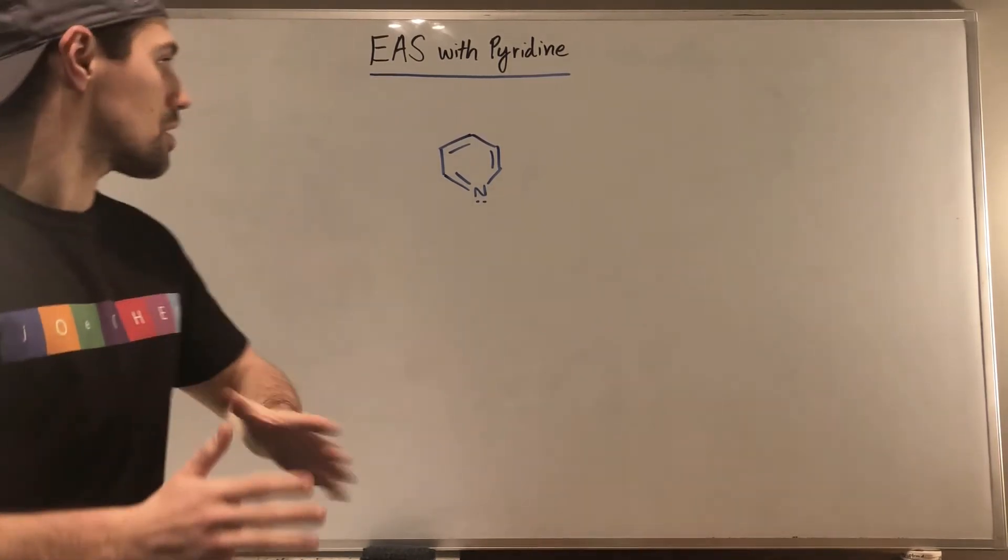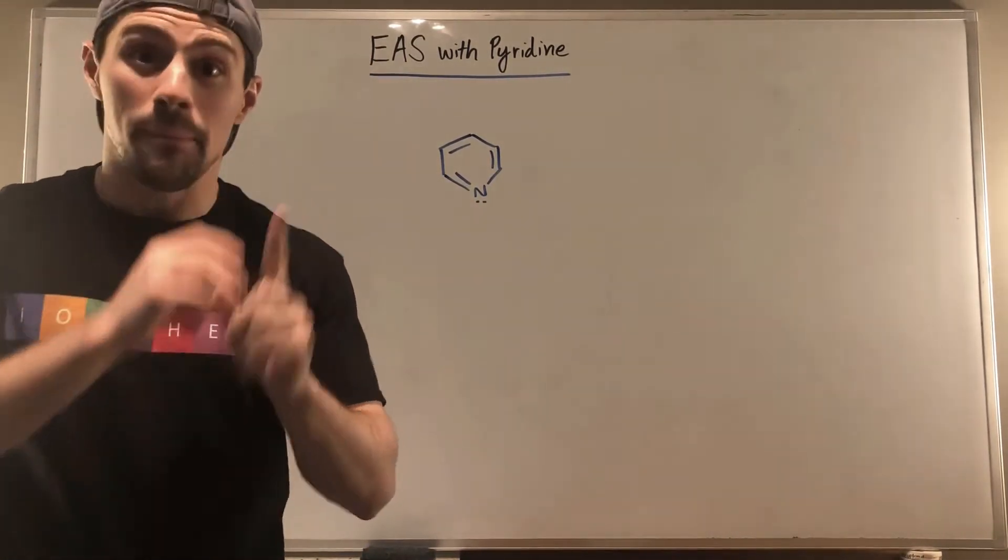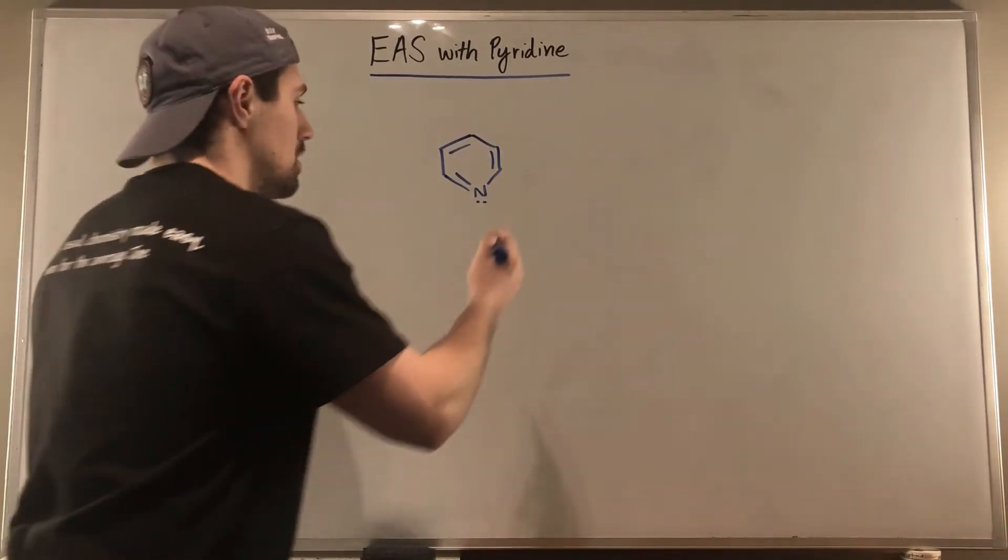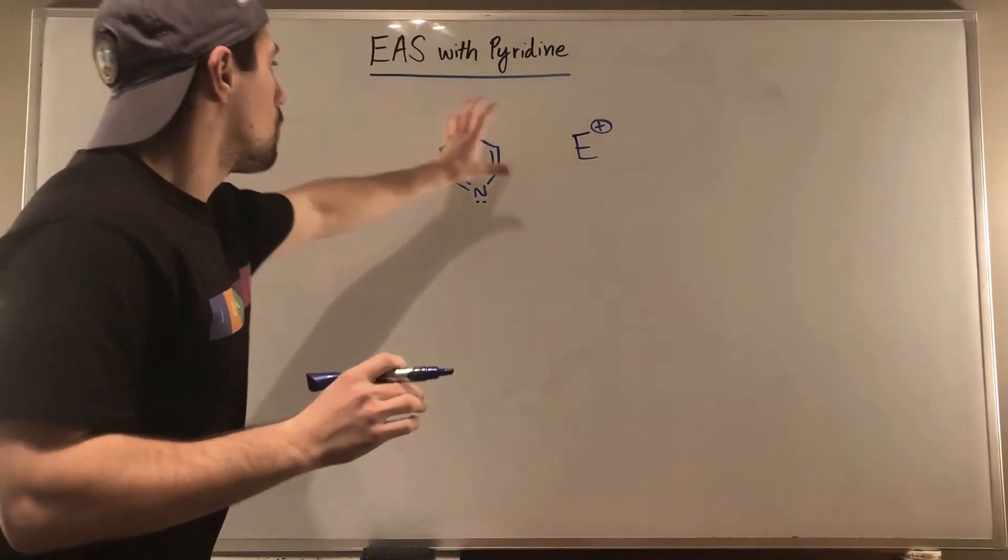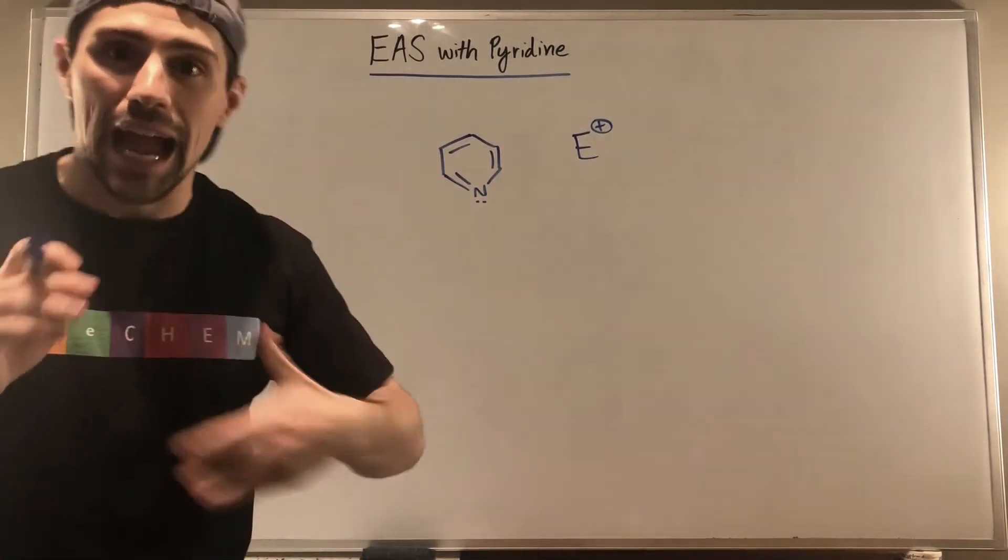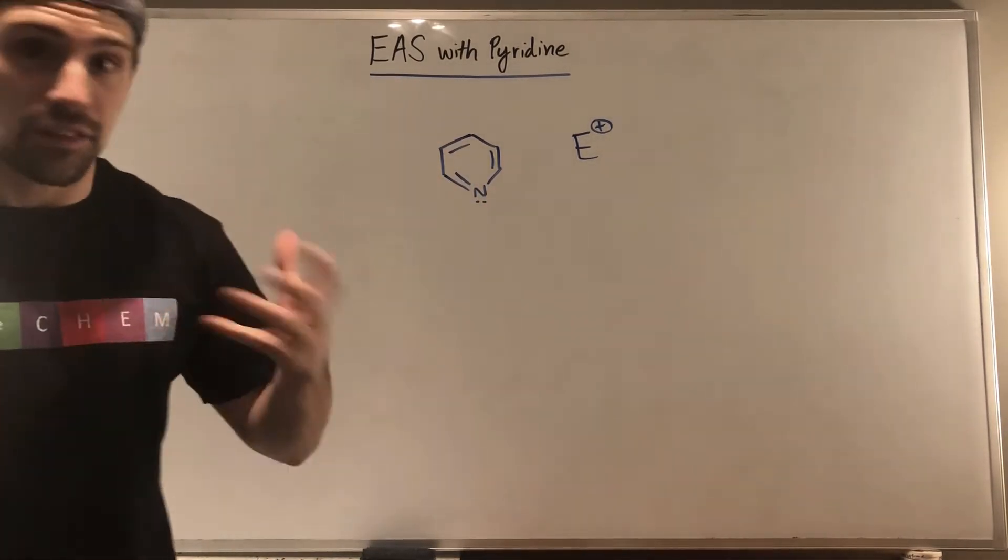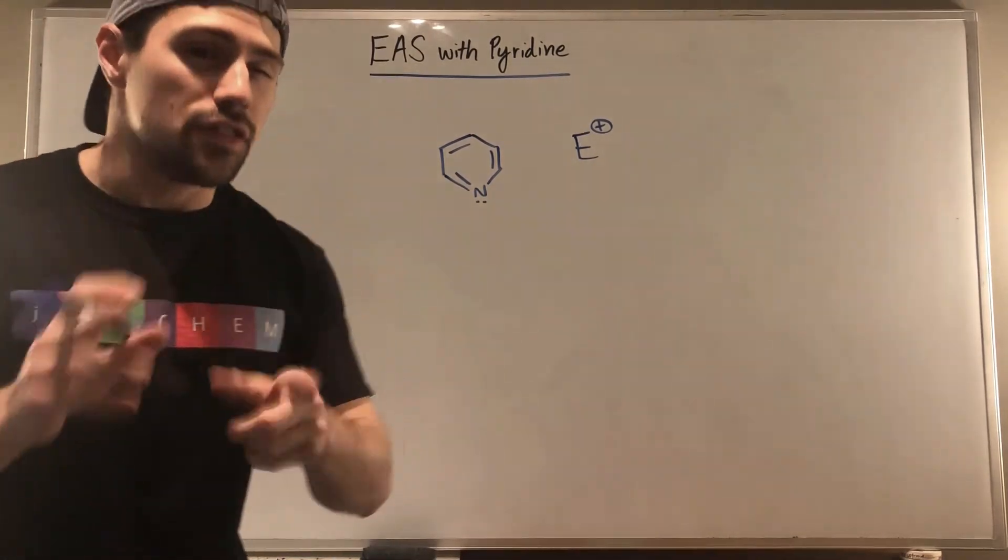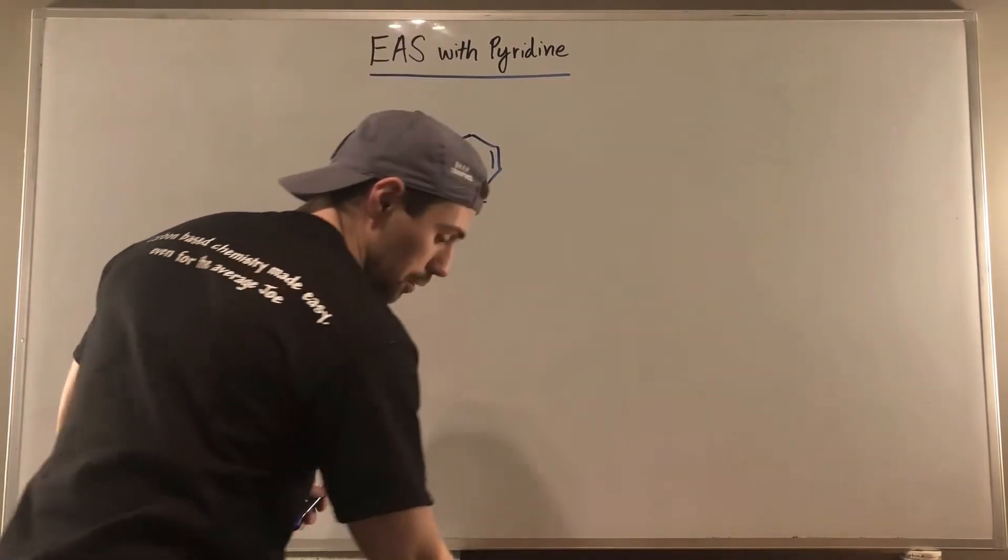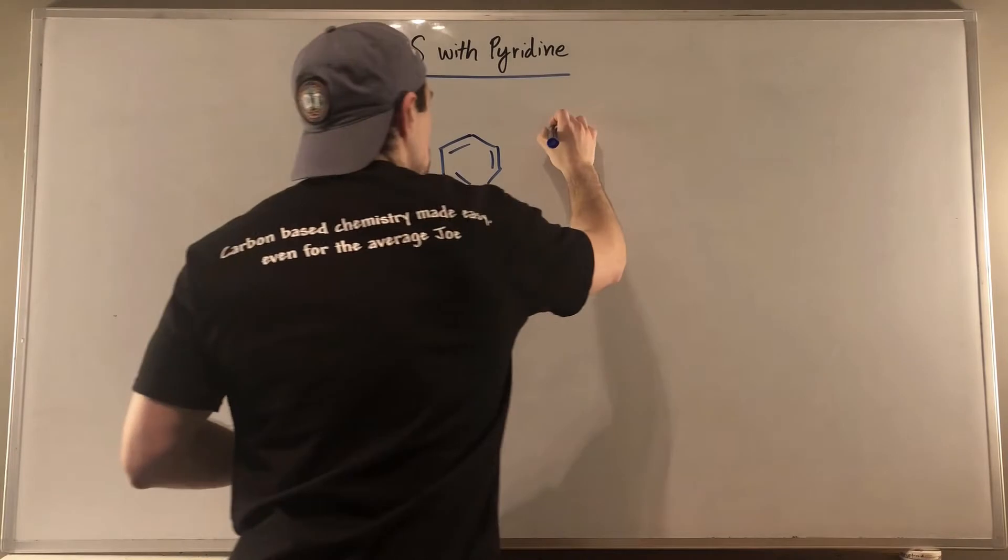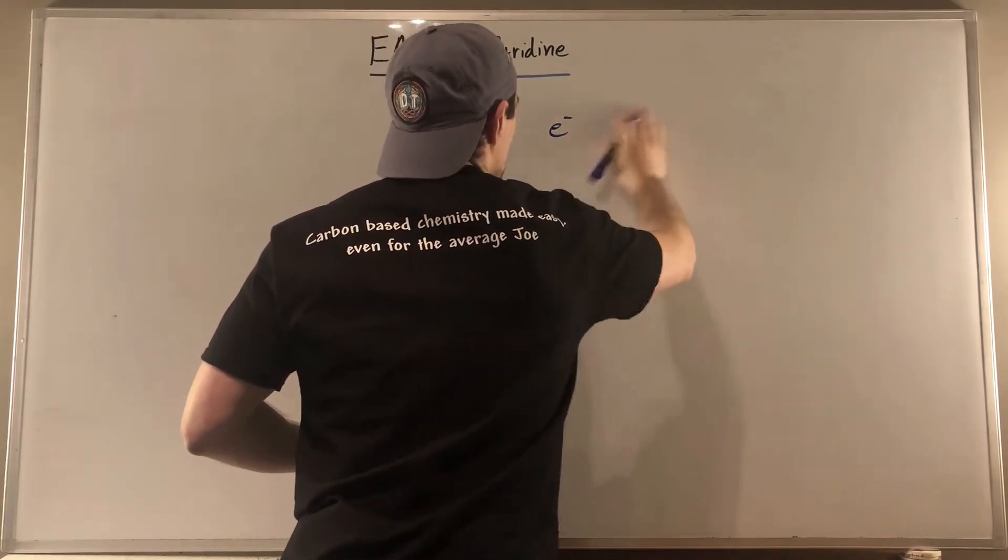But in this video, the star of the show is pyridine. The thing is with pyridine and EAS reactions, remember with EAS we are putting electrophiles on our aromatic system. The reactions go better if we have a lot of negative charge in our aromatic substance. The thing with pyridine is it's electron deficient, electron poor.